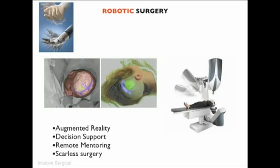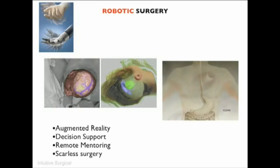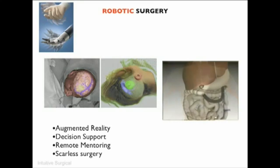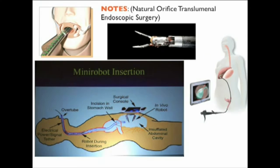This can be integrated with decision support. A surgeon in New York can be helping a surgeon in Amsterdam, for example. And we're entering an era of truly scarless surgery called notes, where the robotic endoscope can come out of the stomach and pull out that gallbladder all in a scarless way. Scarless surgery is mediated by robotic surgery.